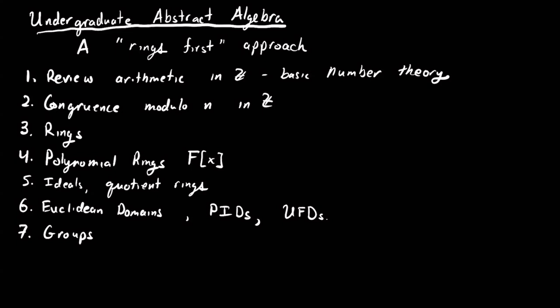So for example, you could think of the integers under addition, that's an example of a group. You can think of the non-zero real numbers under multiplication, that's an example of a group. From linear algebra, if you take the two by two invertible matrices with real entries.